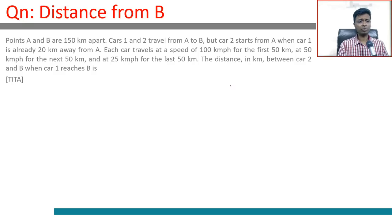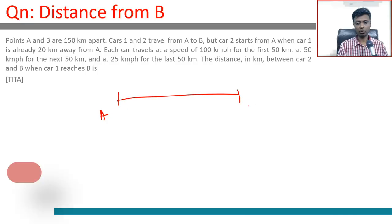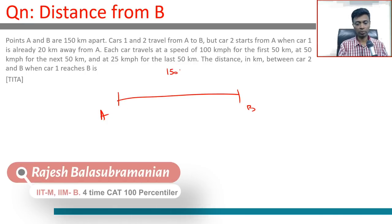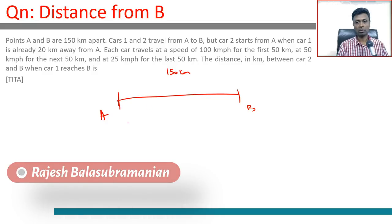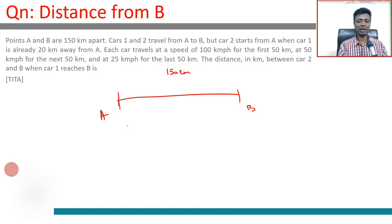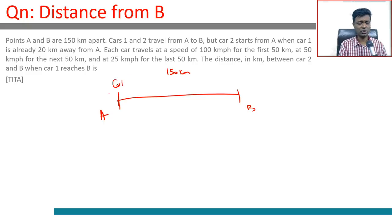Points A and B are 150 kilometers apart. Cars one and two travel from A to B, but car two travels from A when car one is already 20 kilometers from A. So car one starts first, then car two starts.